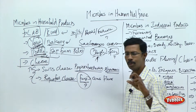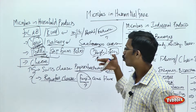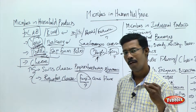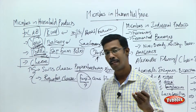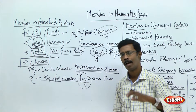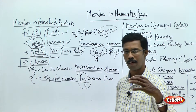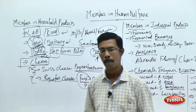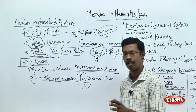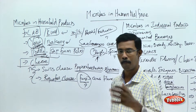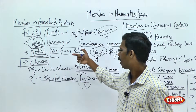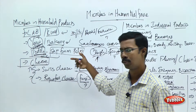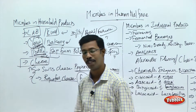Another type of cheese is Roquefort cheese — normal cheese whose surface is grown by fungi. That fungi gives a specific flavour to this type of cheese, and that is called Roquefort cheese. To summarize the household products: we discussed making curd by lactic acid bacteria, which enhance flavour and add nutrient value to milk. Curd has better nutrient value compared to milk. In the baking industry we use Saccharomyces cerevisiae, then toddy, and we also discussed cheese.